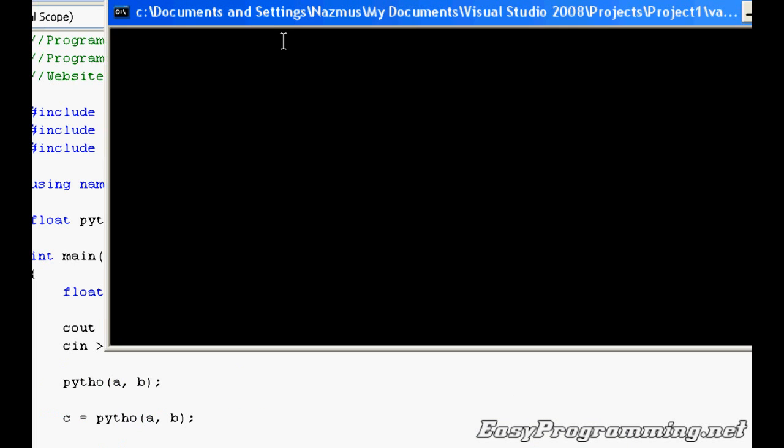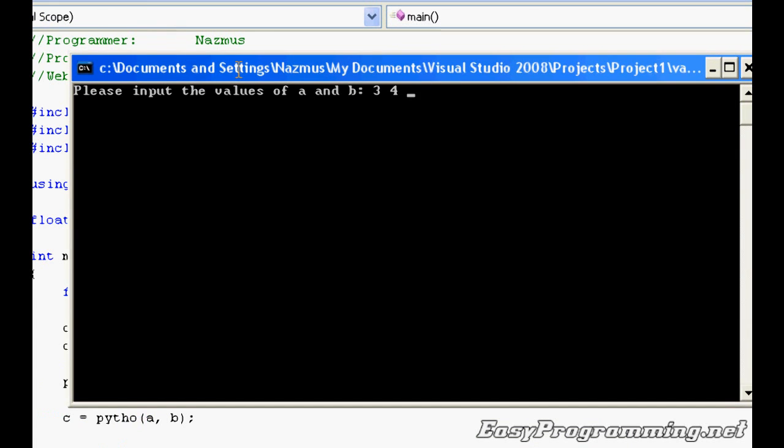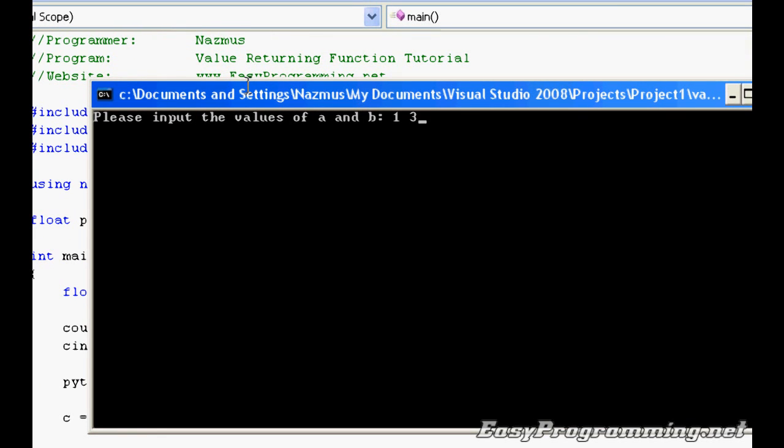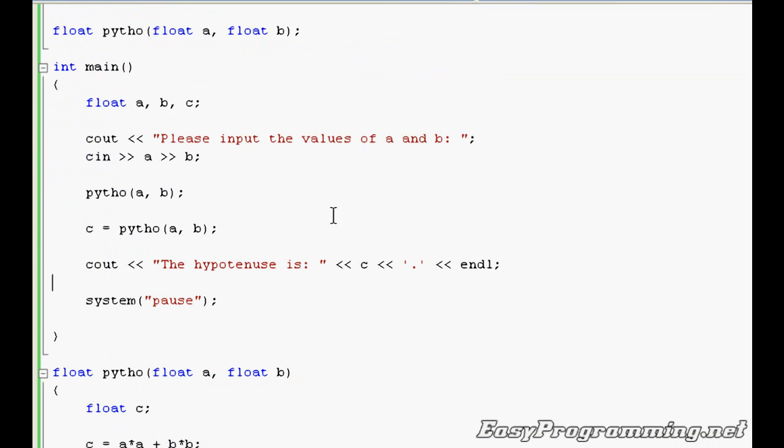Let's run it. It should run properly. 3 and 4. That's 5. I'm going to run it once again with 1 and 3. 1 and 3. And there's 3.16228. It runs perfectly.